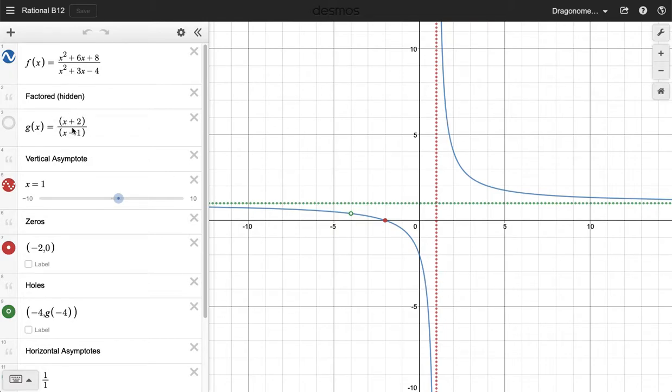In the numerator, we can make the numerator 0 at negative 2. And that gives a 0 for the function in place where it crosses the x-axis, which is right there, that red dot, negative 2, 0.